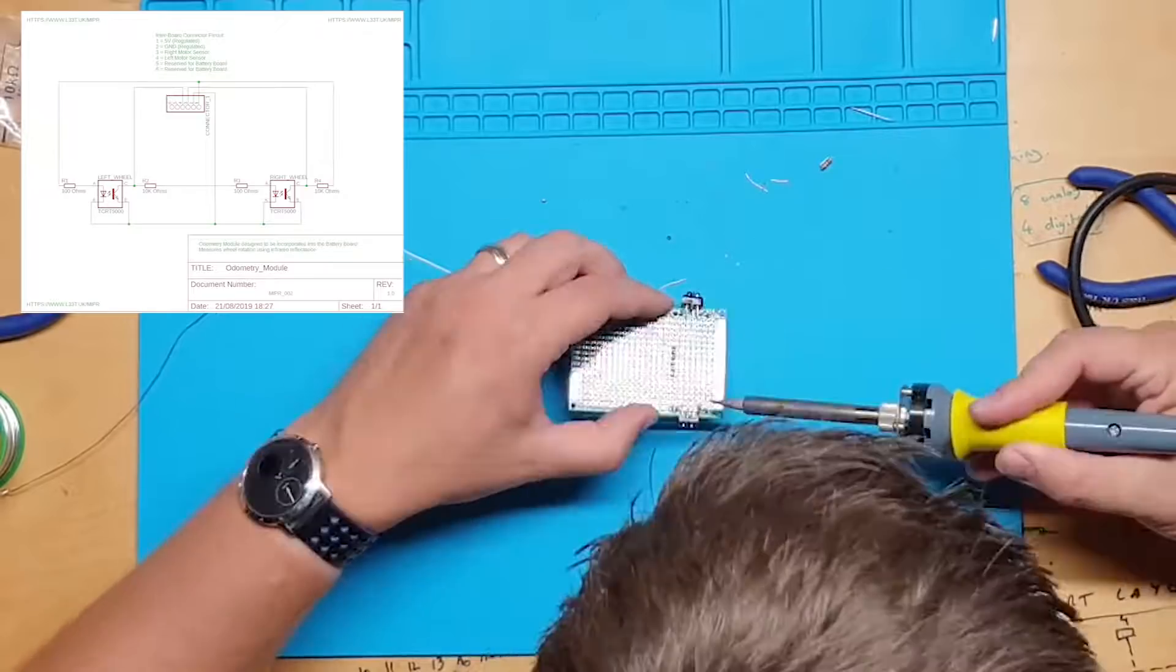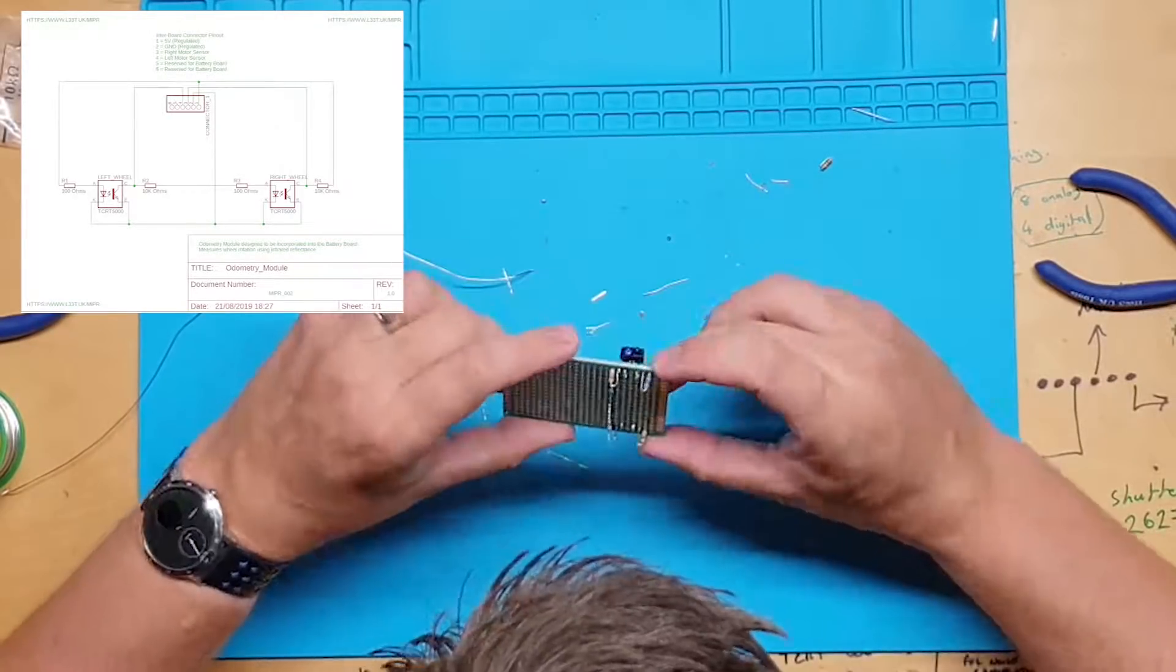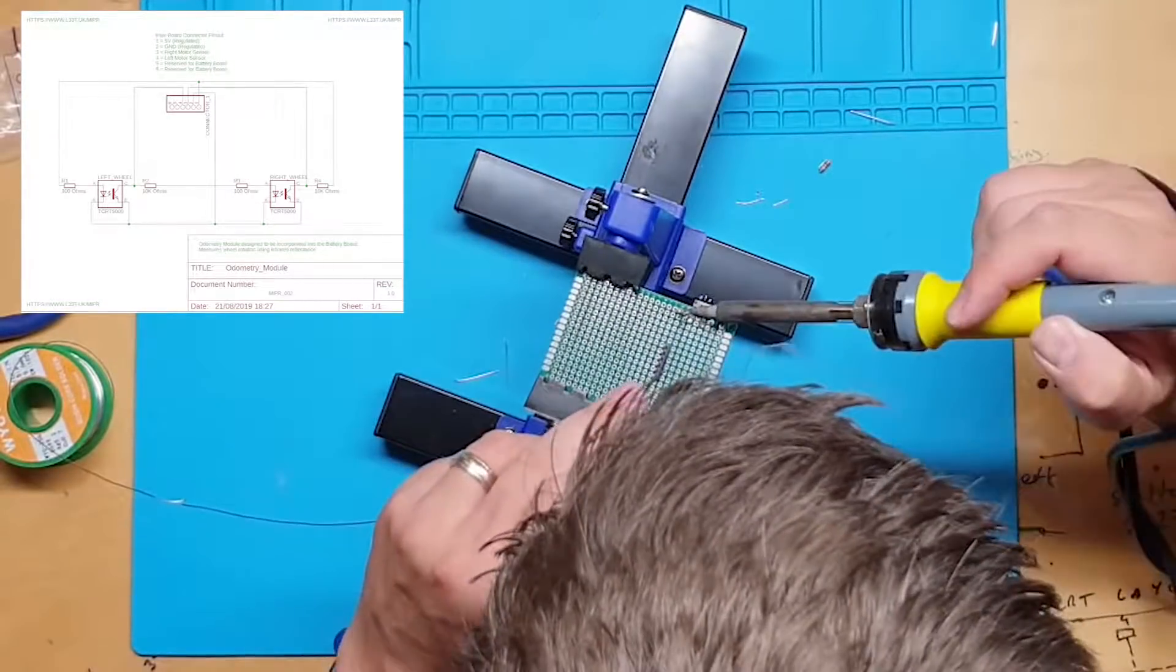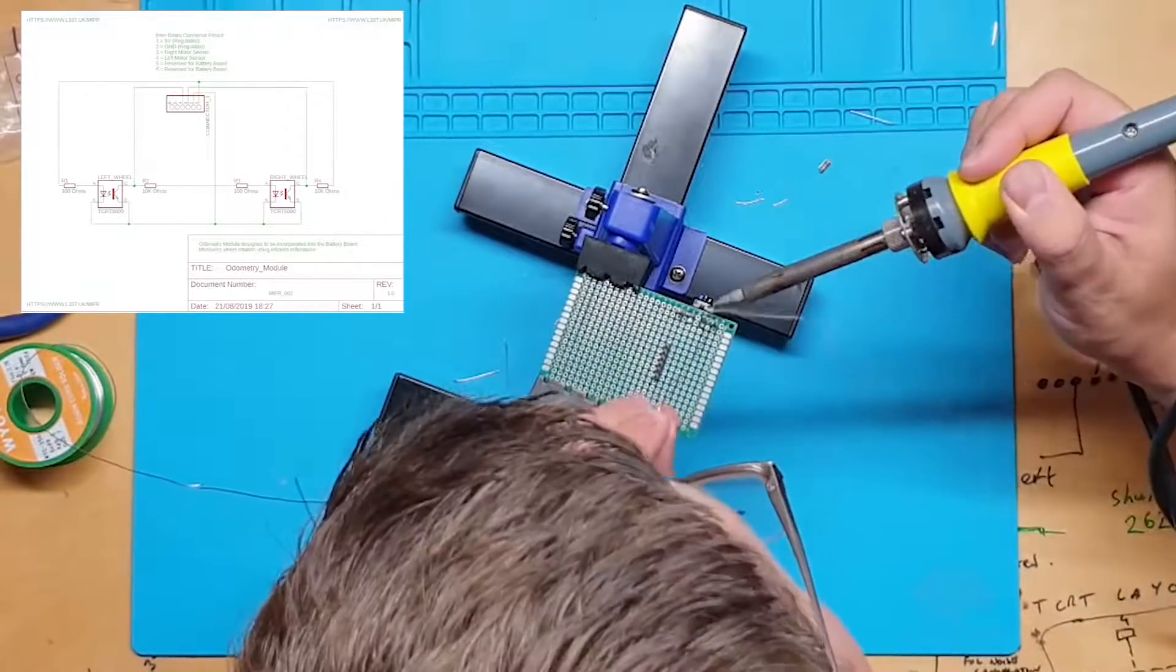Now everything is added to the board it's just a matter of connecting everything up in accordance with the diagram. I'm still using a handle of copper wire so I can cross wires without creating short circuits.